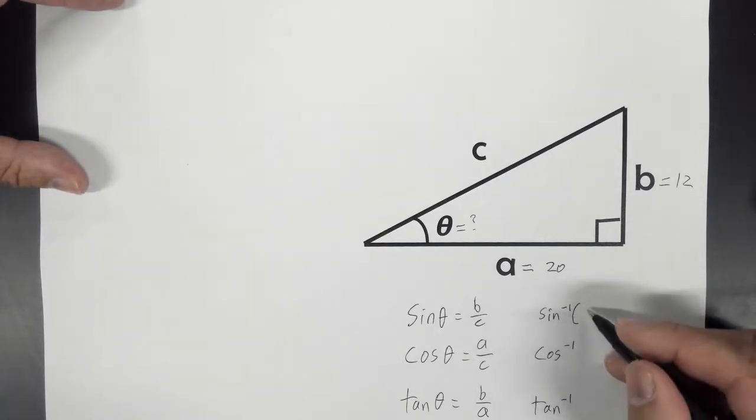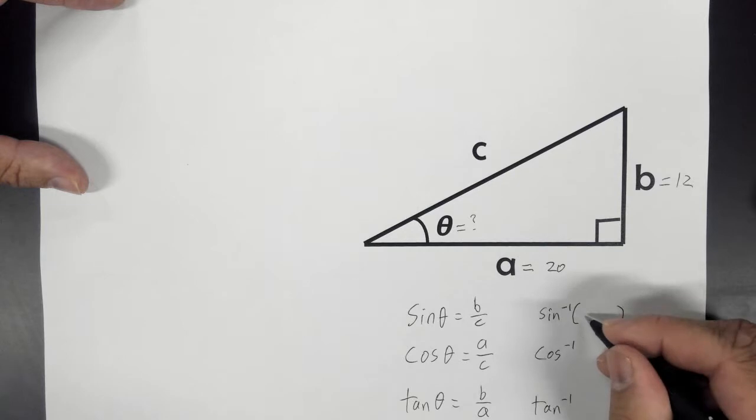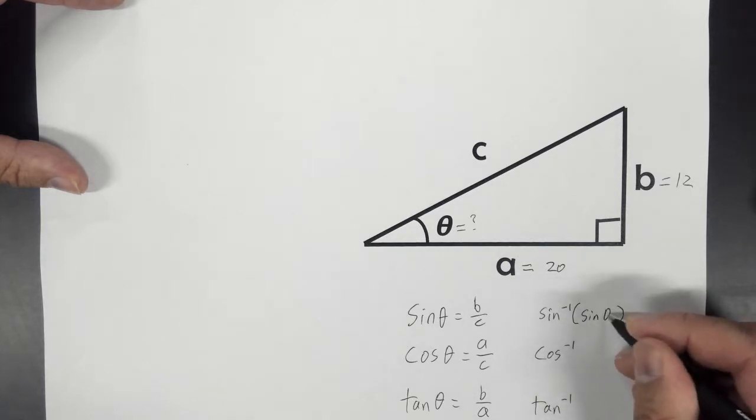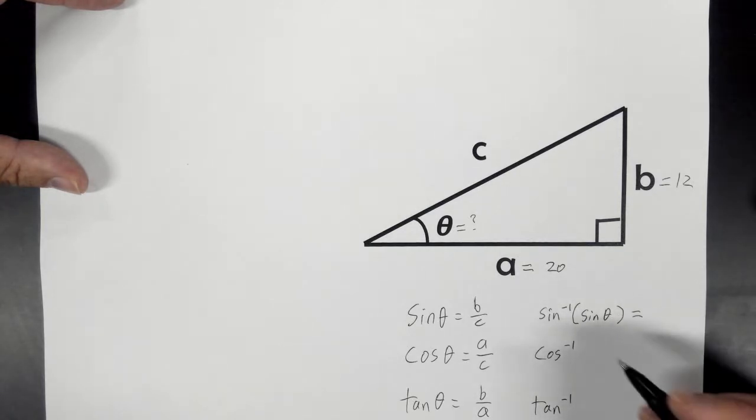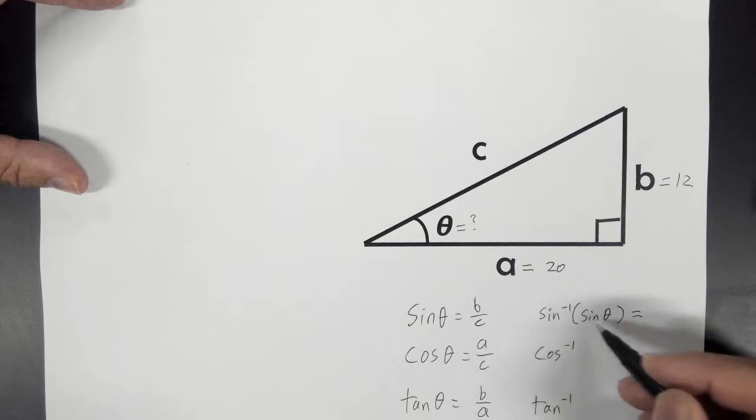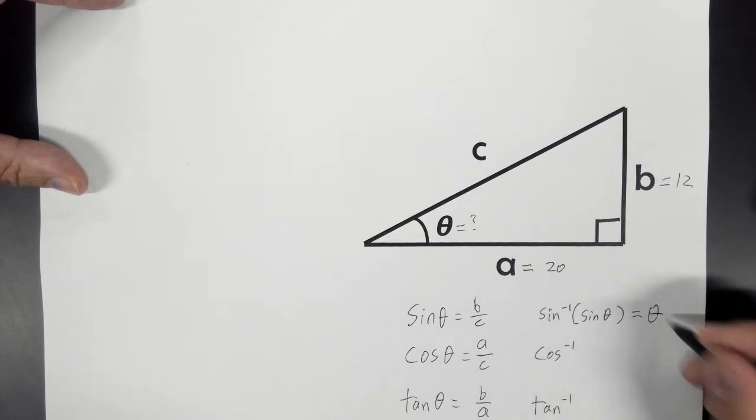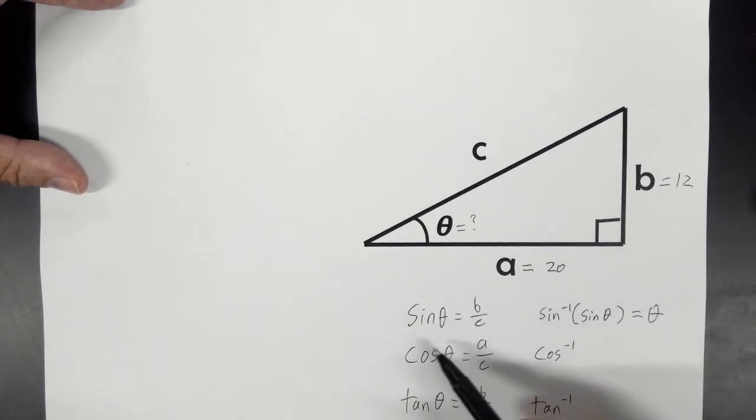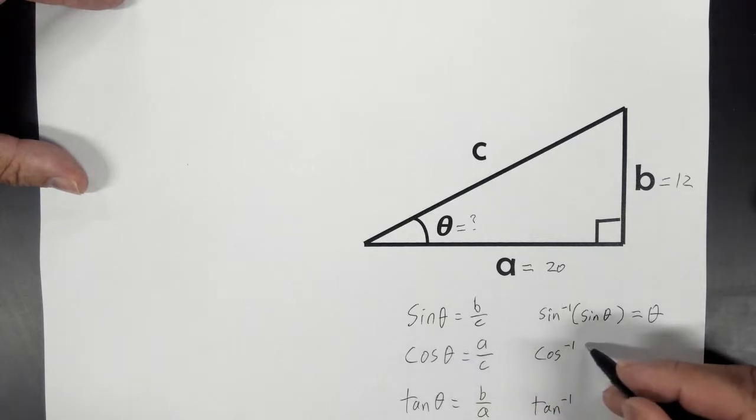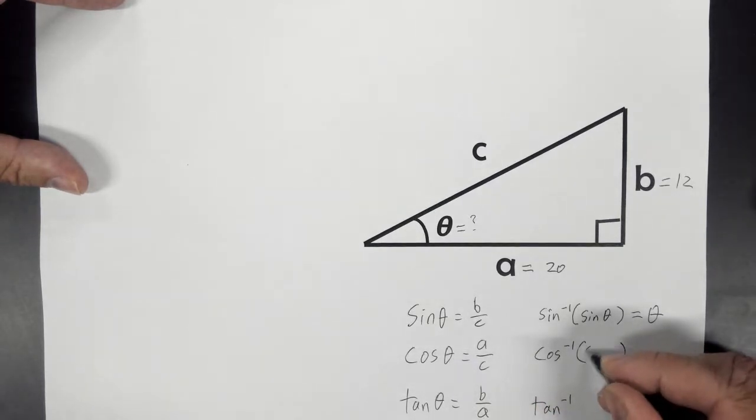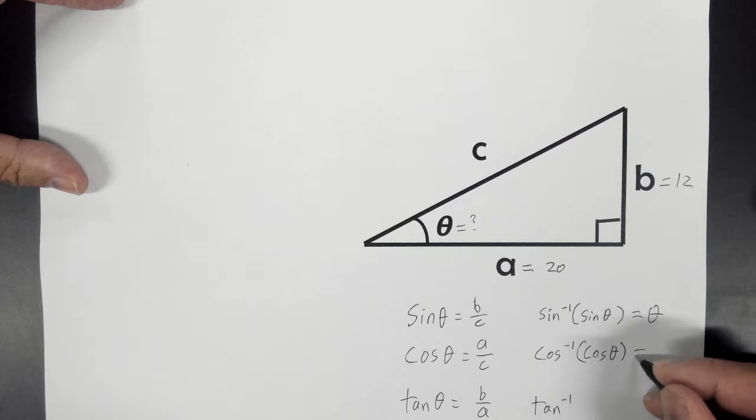That means if you were to put parentheses here and put sine of theta there, what would that equal? Well, in this case, this and this would cancel out, and you would just get this. So it's a way to get kind of inside the sine, cosine, and tangent function. Now, why is that important? I will show you.